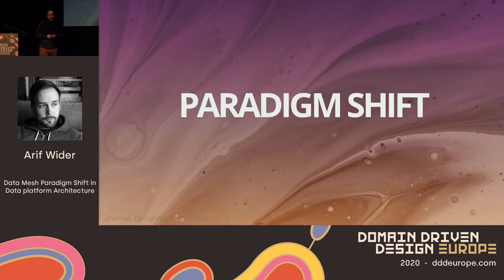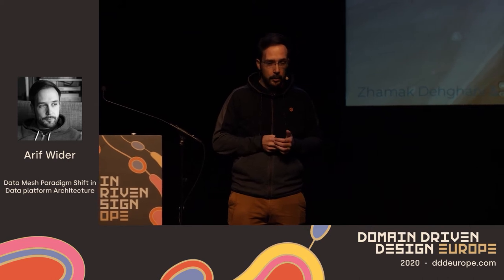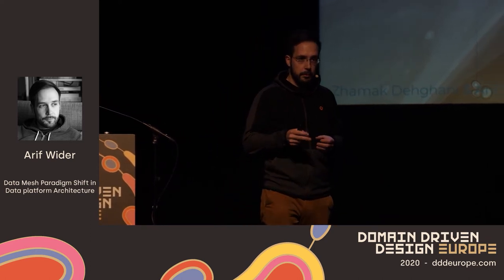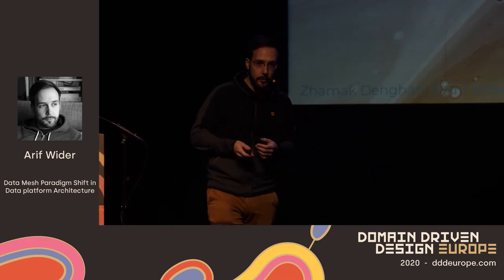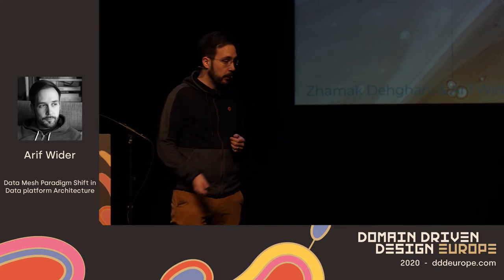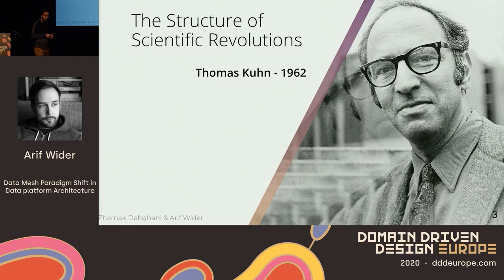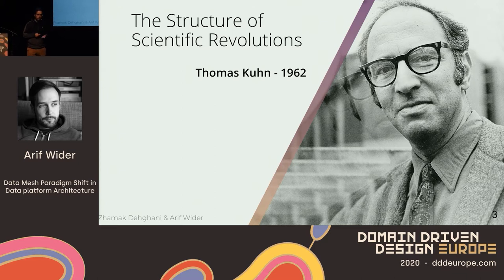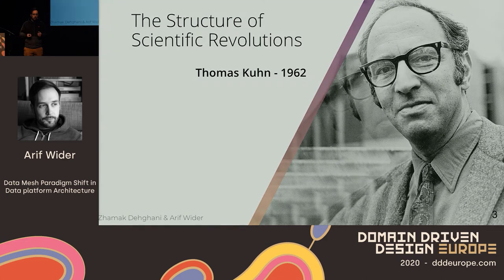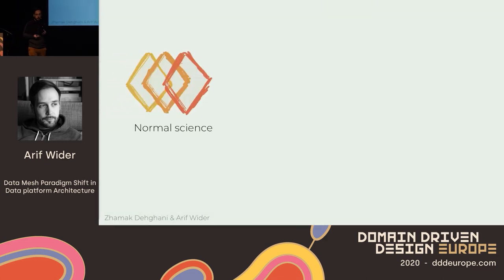I am sure all of you have heard the term paradigm shift before — it is being used quite a lot. But who of you know where the term actually originates from? The term was actually coined by Thomas Kuhn in his 1962 book, The Structure of Scientific Revolutions. Thomas Kuhn was an American physicist who became a scientific philosopher, and he came up with this model of how scientific revolutions work.